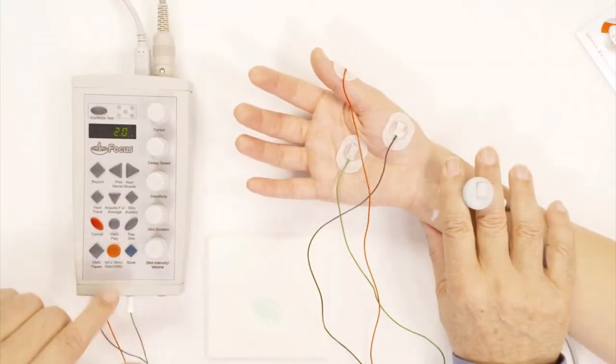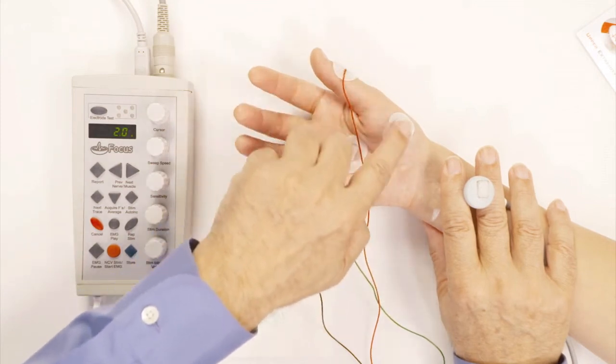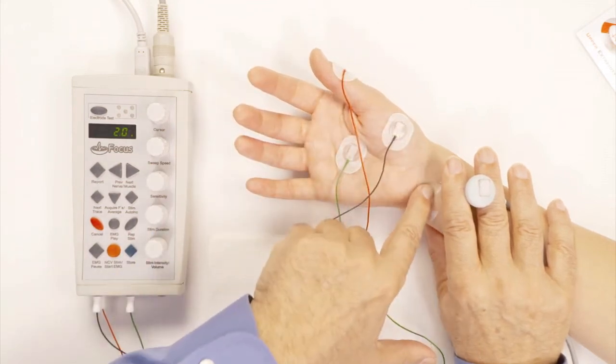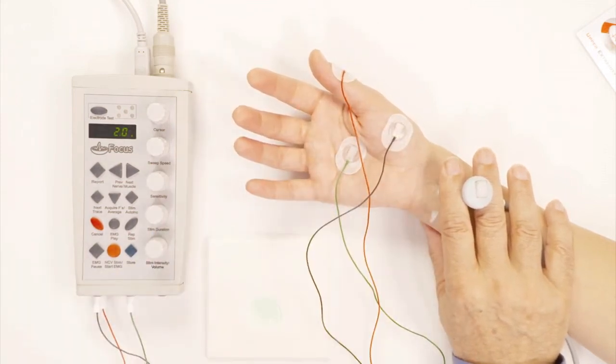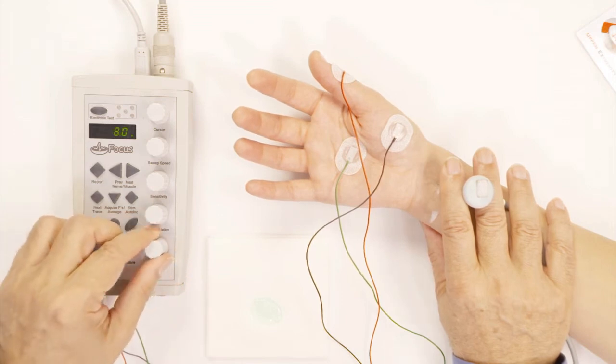To do the F-wave, I keep the setup exactly as it was for the median motor, and I stimulate exactly in the same place as I stimulated for the median motor. Now, here I do multiple stimulations because I want to see the best F-wave that I can get. So, here we go.